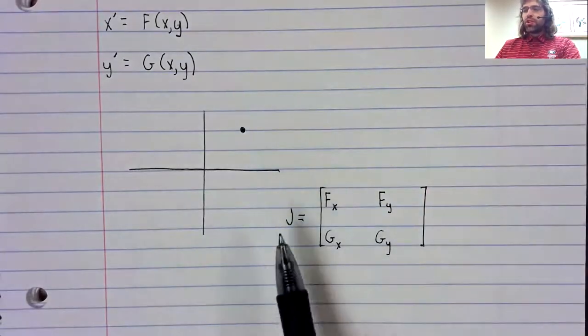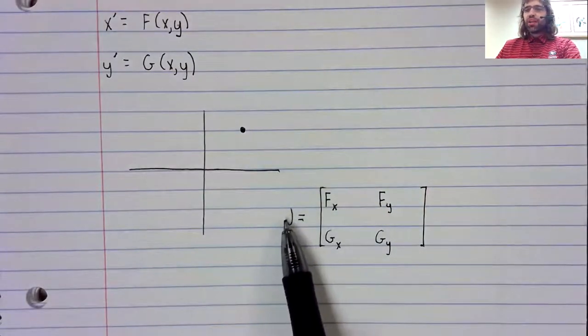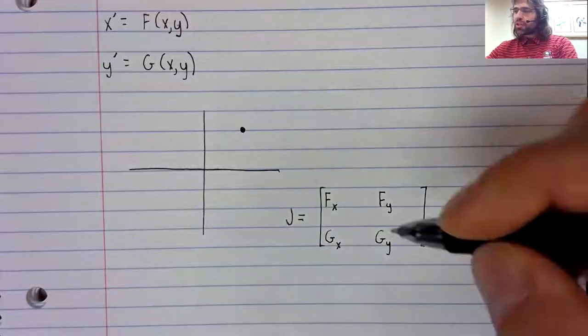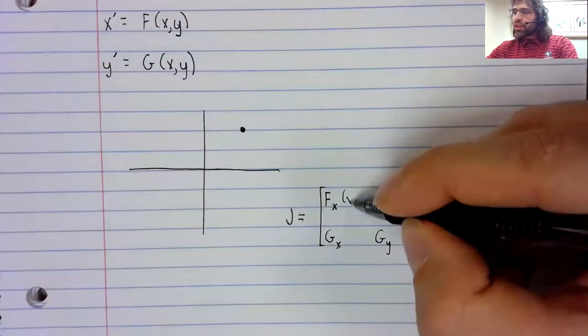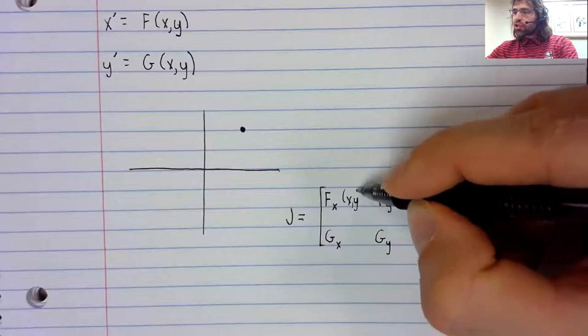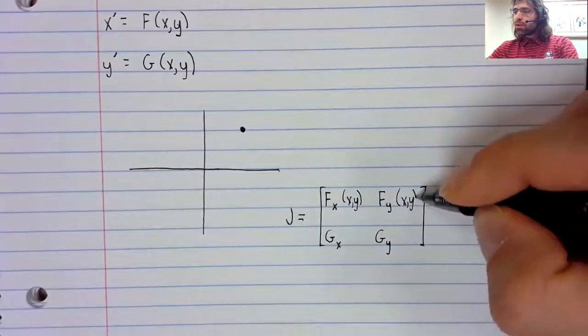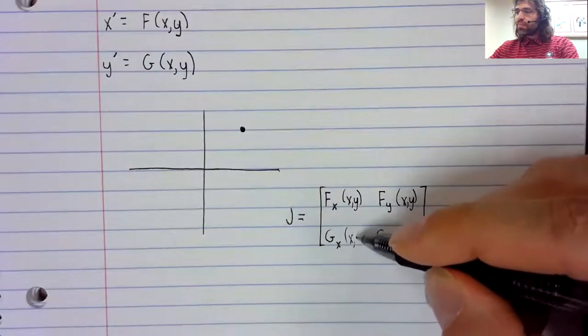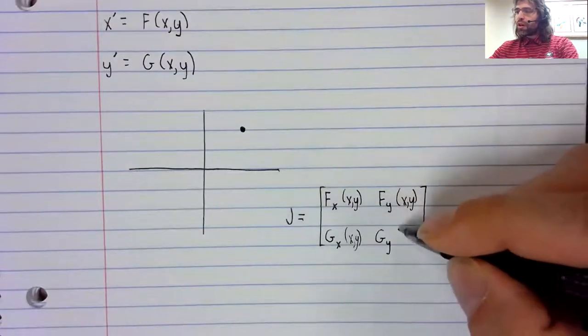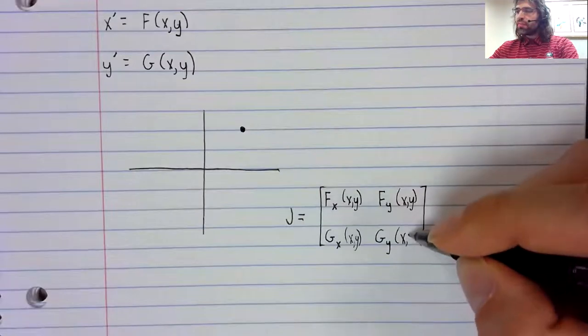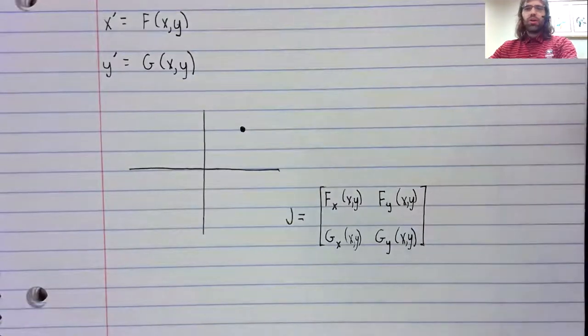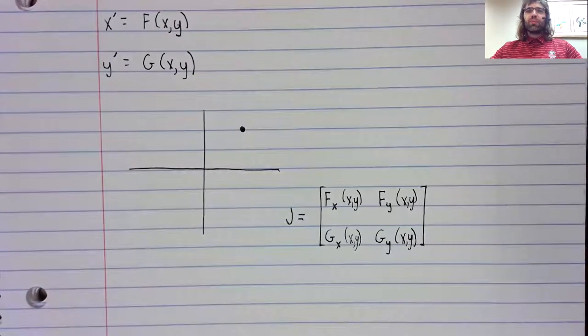And the Jacobian is a matrix of functions. I mean, I haven't used function notation, but these partial derivatives are all functions of x and y.